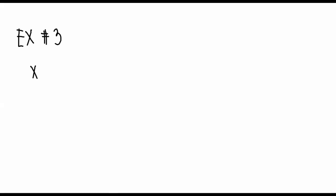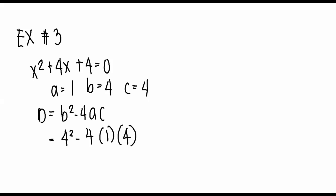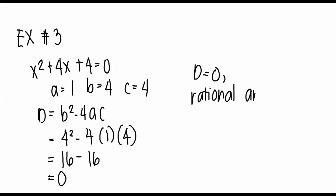For our example number three, we have x squared plus 4x plus 4 is equal to zero, where a is equal to 1, b is equal to 4, and c is equal to zero. So we have 4 squared minus 4 times 1 times 4, which is equal to zero. Since our discriminant is equal to zero, our roots are rational and equal.